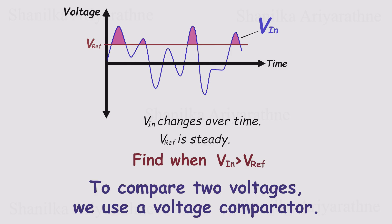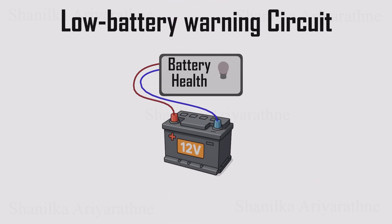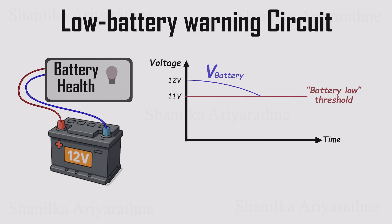That's where a voltage comparator comes in. It sounds simple, but this little trick shows up everywhere. Need a low battery warning? Just build a comparator circuit. Set your reference voltage to the battery low threshold and compare it to the actual battery voltage. When the battery drops below that point, the comparator flips its output, turning on an LED, sounding an alarm, or even starting the charger automatically.